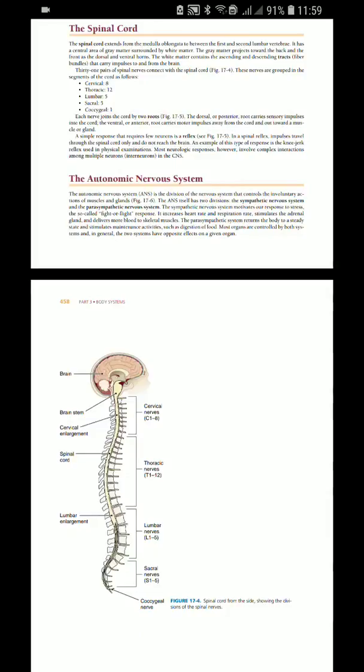It has a central area of gray matter surrounded by white matter. This is opposite to the brain, where the outside is gray matter and inside is white matter. The gray matter projects towards the back and front as the dorsal and ventral horns.